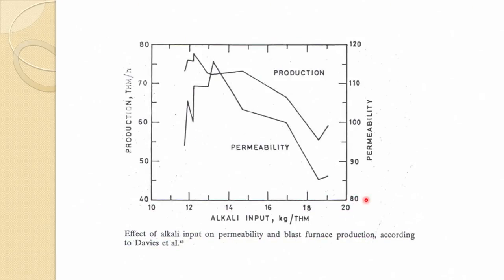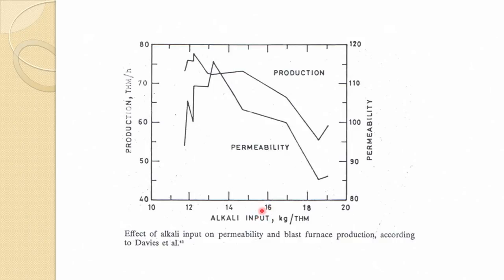As alkali input in kg per ton of hot metal increases, it adversely affects burden permeability, and consequently production and productivity decrease — which is clear from the data. Therefore, alkali percentage in raw materials should be kept as low as possible. Beneficiation and other preprocessing steps can help control alkali levels.